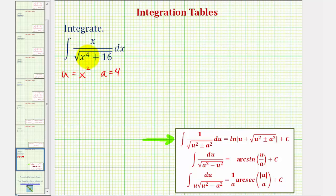If it's helpful, we could rewrite this to make it better match this form. We could write this as the integral of x divided by the square root of, instead of x to the fourth, we could write x squared squared. And instead of 16, we could write four squared.